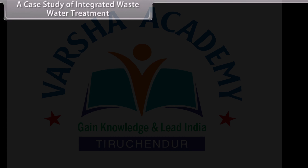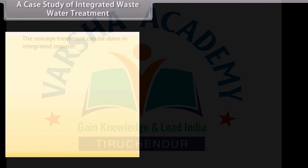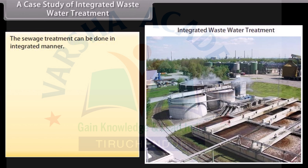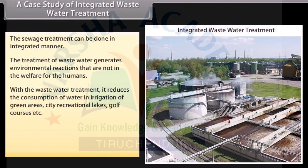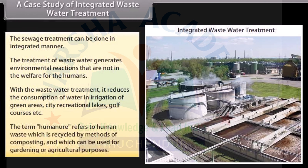Sewage treatment can be done in an integrated manner. The treatment of wastewater generates environmental benefits for the welfare of humans. Wastewater treatment reduces the consumption of water in irrigation of green areas, city recreational lakes, golf courses, etc. The term 'humanure' refers to human waste which is recycled by methods of composting and can be used for gardening or agricultural purposes.